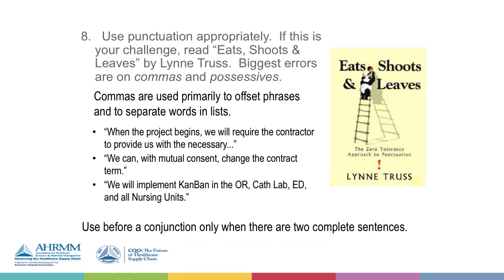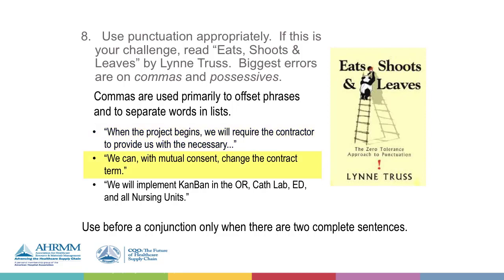The two biggest errors in punctuation are generally commas and possessives. Commas are used primarily to offset phrases and to separate words in lists. Probably the easiest way to think about the correct use of a comma when offsetting phrases is: do we pause when we're saying something? For example: 'When the project begins, we will require the contractor to provide us with the necessary items.' Did you hear how you pause after 'when the project begins'? It's a perfect place for a comma. 'We can, with mutual consent, change the contract term' — 'with mutual consent' is a phrase within the sentence and is offset by commas.